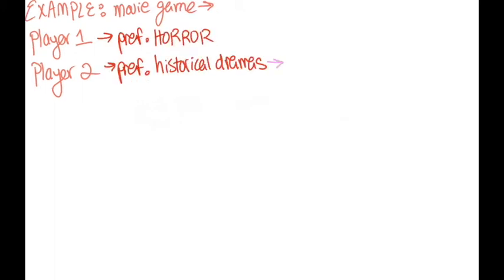Let's say player 1 wants to invite player 2 to the movies. Player 1 likes to watch horror movies, while player 2 likes historical dramas. However, player 1 is unsure if player 2 will even want to come with them to the movies. We can represent this scenario by assigning player 2 with two types, one that wishes to go to the movies, and the other that does not.